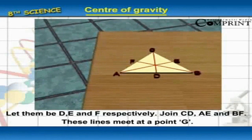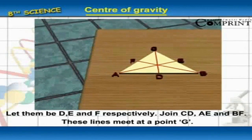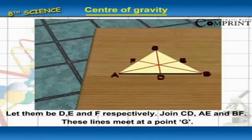Let them be D, E and F respectively. Join CD, AE and BF.